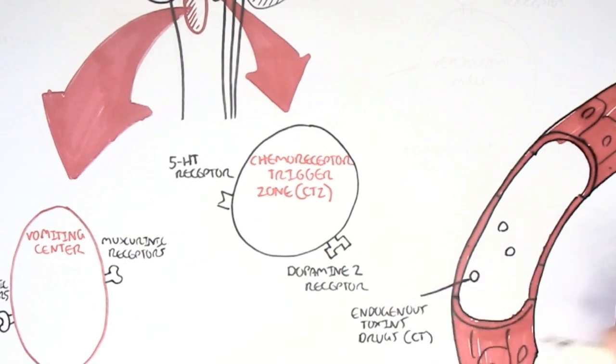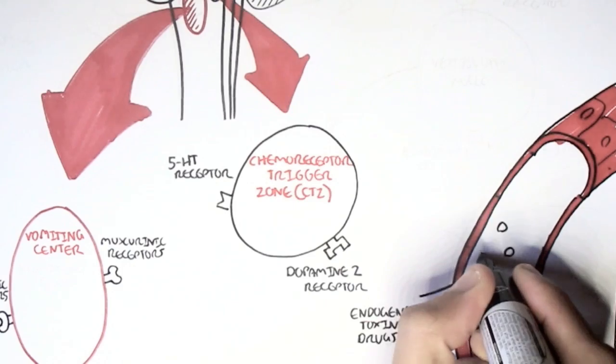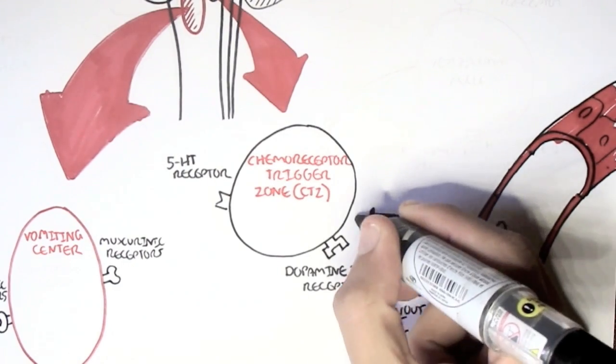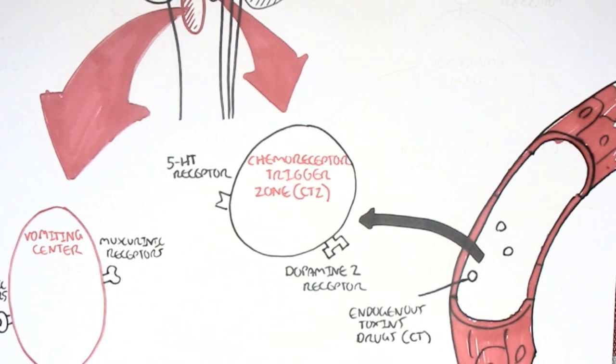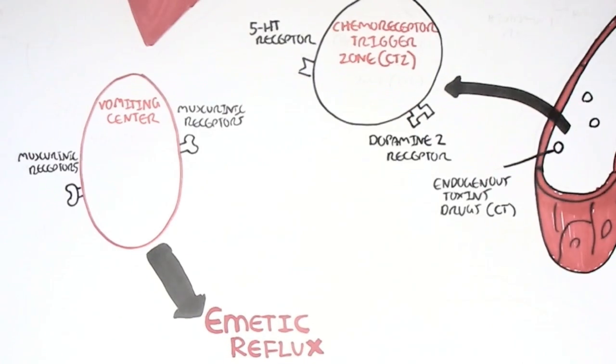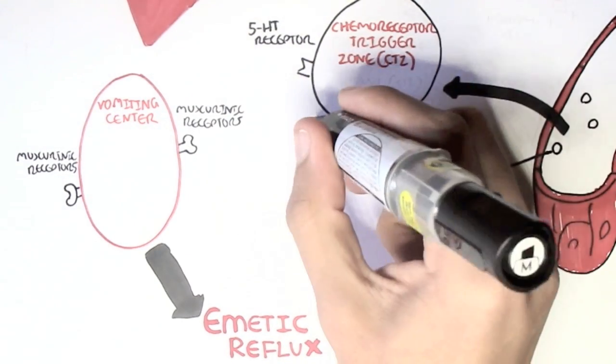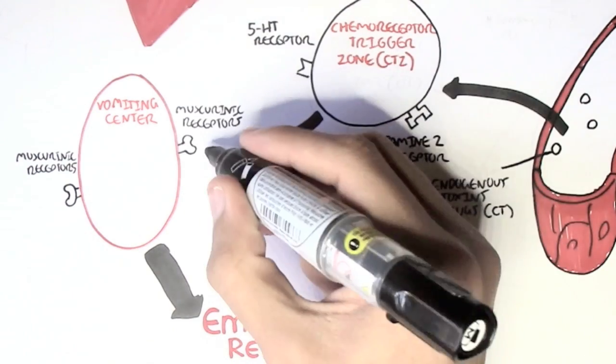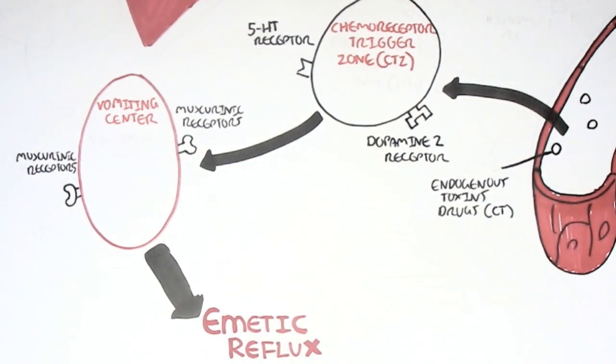Such as toxins from chemotherapy that are circulating around, or toxins from drugs like digitalis. So these toxins that are circulating around can conveniently activate the receptors of the chemoreceptor trigger zone. Activation of the chemoreceptor trigger zone will then stimulate the vomiting center, which will then activate the emetic reflex, the physical act of vomiting.